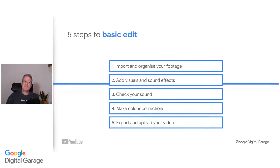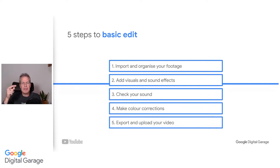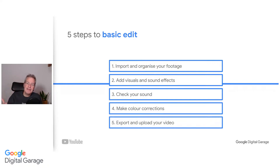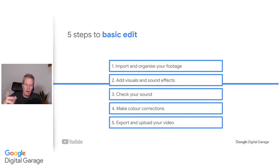Five steps to basic editing. The best time to start thinking about editing is during the writing stage. By envisioning your edits early on, you can anticipate how your video will look and how you want viewers to react. The five steps are: import and organize your footage, add visuals and sound effects, check your sound, make color corrections, then export and upload your video.